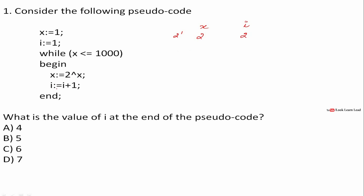Now x is 2, i is 2. Again checking the condition — yes — so x would be 2 to the power 2, which is equal to 4, and i is equal to 3. Next, 4 is less than 1000, so x becomes 2 to the power 4, which is equal to 16, and i would be equal to 4. Next, 16 is less than 1000, so we would have 2 to the power 16, and i would be 5. Since 2 to the power 16 is greater than 1000, the final value of i is 5. The answer is 5.